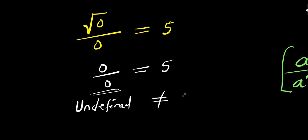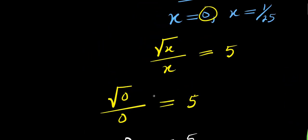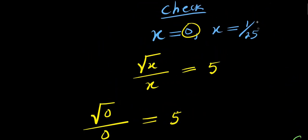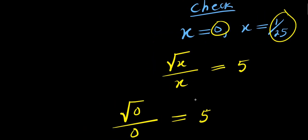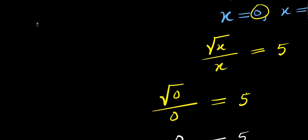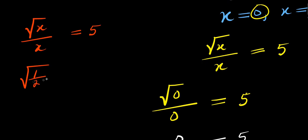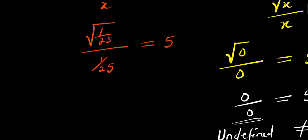When we plug in x equals 0, the result is not 5, so this shows that x equals 0 is not the correct solution. Now let's consider when x equals 1 over 25. We substitute into square root of x divided by x equals 5, giving us square root of 1/25 divided by 1/25.